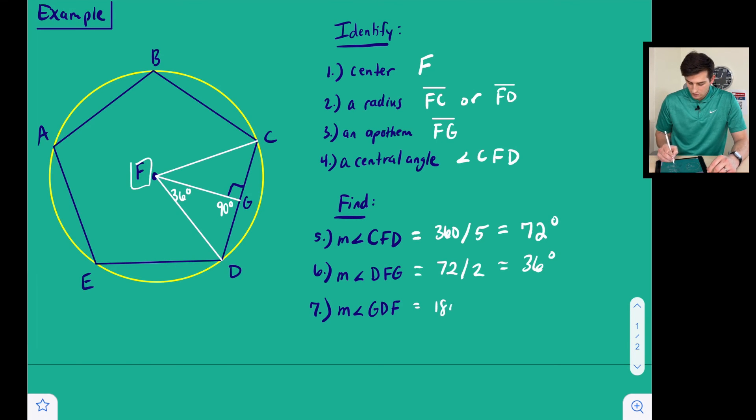Now we can take 180 because of our triangle sum theorem—these three angles should add up to 180—and we want to subtract 90 and subtract 36. So that's going to tell us that angle GDF is 54 degrees.